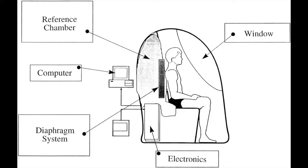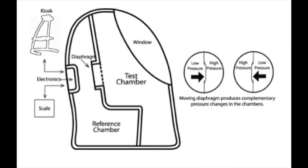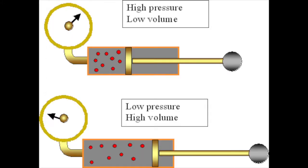The Bod Pod measurement process begins with a baseline measurement of the pressure and volume of the empty test chamber. The Bod Pod consists of two chambers, the test chamber and the reference chamber, with a common wall between the two. In the wall between the two chambers, there's a diaphragm that oscillates during testing to produce small changes in the volume to the test and reference chambers. When the volume increases in one chamber, it decreases equally in the other. The pressure in the two chambers responds immediately to these changes in volume, and the degree to which the pressure changes indicates the size of each chamber.